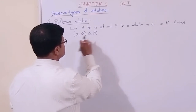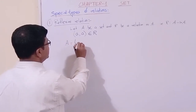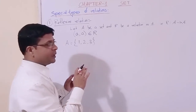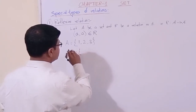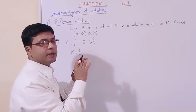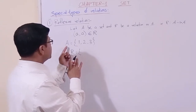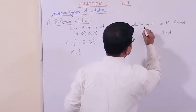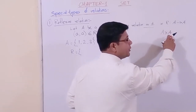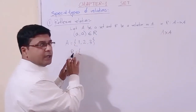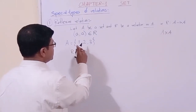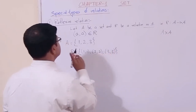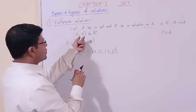Let us consider a set A whose elements are 1, 2, 3. A relation is a subset of the Cartesian product A×A. So the relation is a subset of A×A. Now here, if the relation contains (1,1), (2,2), (3,3), then it is a reflexive relation because every element a has (a,a) present.